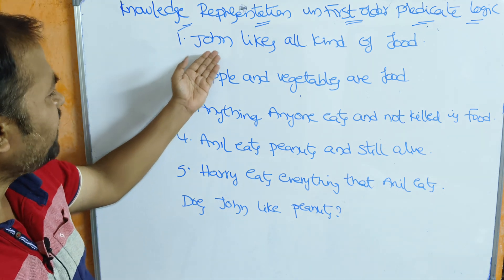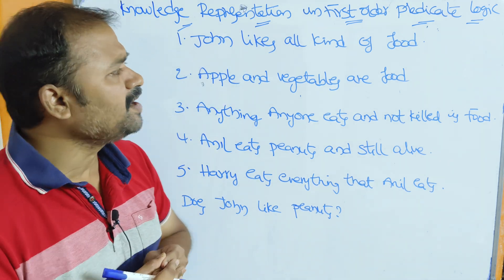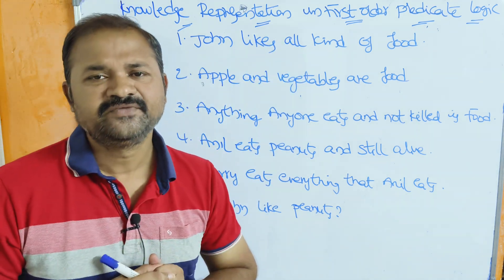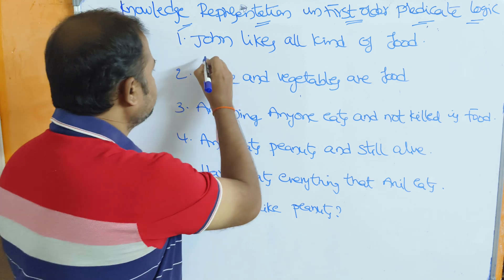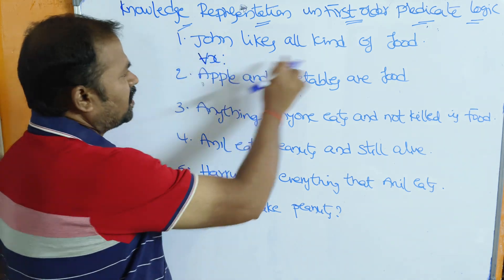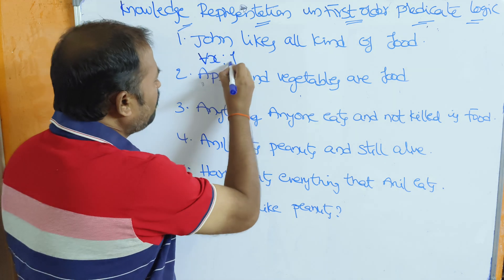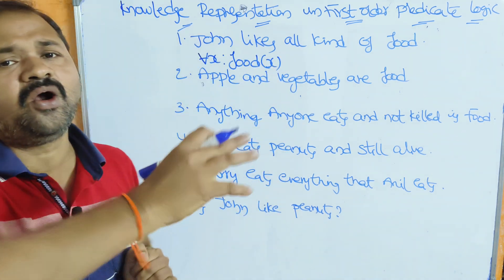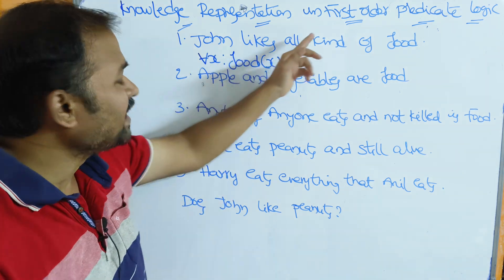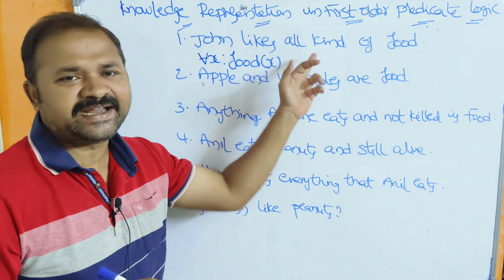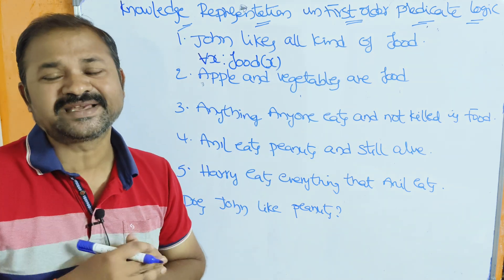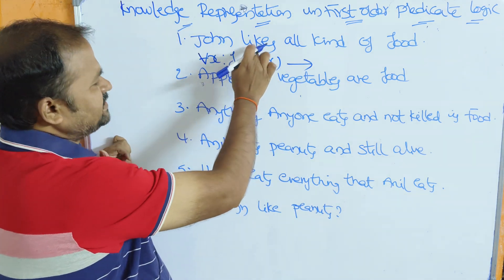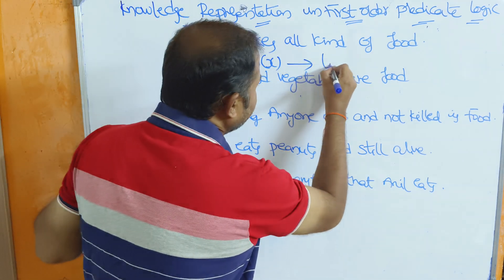Let us see the first statement: John likes all kinds of food. Here 'all' means we have to use the universal quantifier. So for all x, food of x. 'Food of x' means all types of food. If the sentence contains 'all', then we have to use the implication symbol. Likes is the predicate.